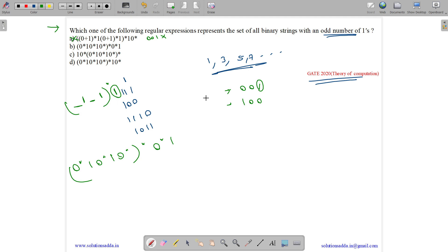Can we generate 100? Can we generate 100? No, we can't generate. And 1 should always come in the last. But after 1 nothing is there in this expression. So it can't generate 100.